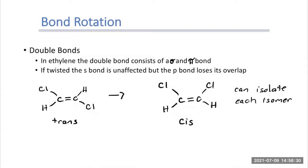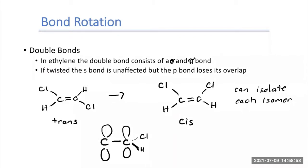The reason the double bond gets stuck into place: if we draw our bond here, let's say here's our pi bond — there's a chlorine in the back, the cis structure, another chlorine in the back, a hydrogen coming out. The red line in the middle is our sigma bond, our single bond that connects the carbons. The pi bond consists of two p orbitals overlapping on the top and bottom. If I try to rotate it, that pi bond overlap will break.